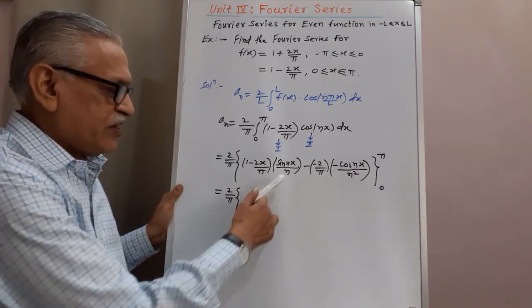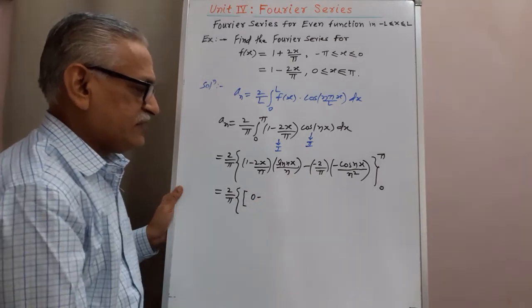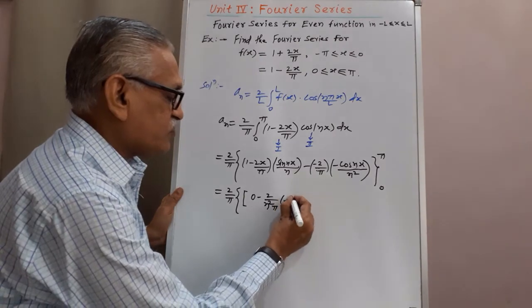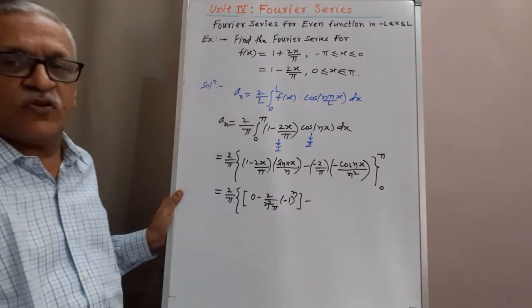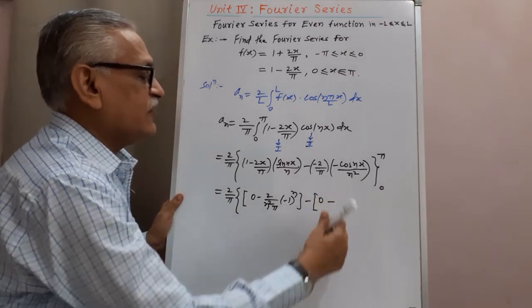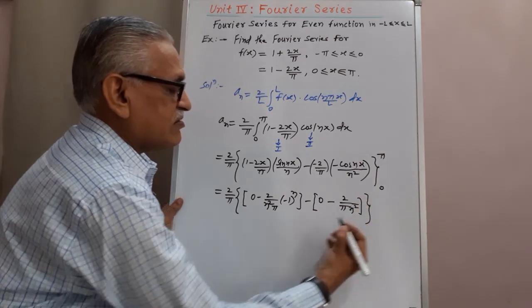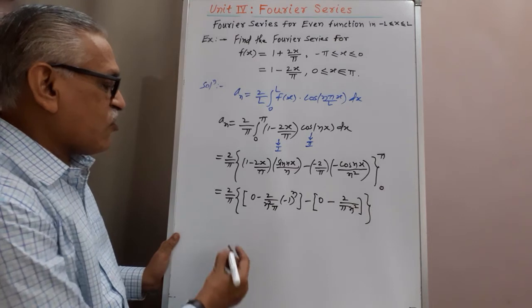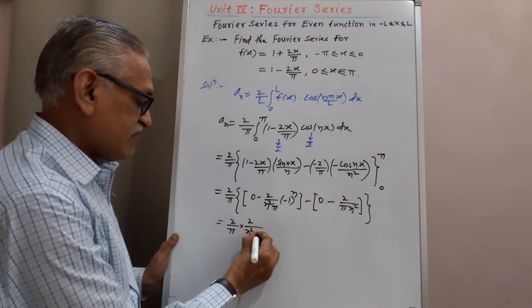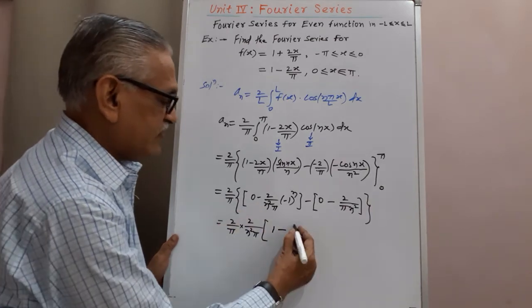Substituting the upper limit x = π: sin(nπ) = 0, so that term vanishes. We are left with −(2/n²π) × cos(nπ), and cos(nπ) = (−1)ⁿ. Substituting the lower limit x = 0: sin(0) = 0 and cos(0) = 1, giving −(2/n²π) × 1. Taking (2/n²π) common, the remaining terms give (2/π) × (2/n²π) × [1 − (−1)ⁿ].